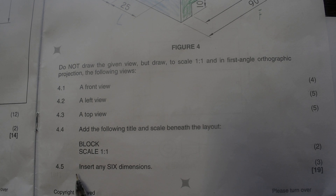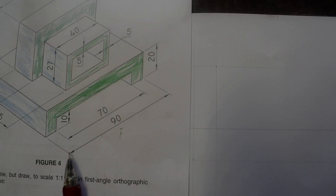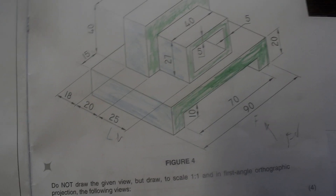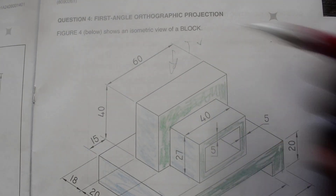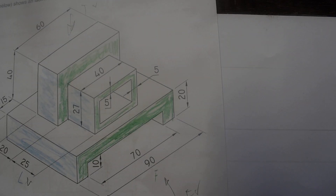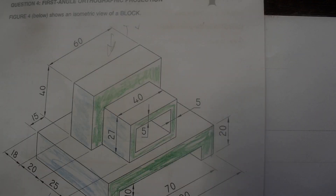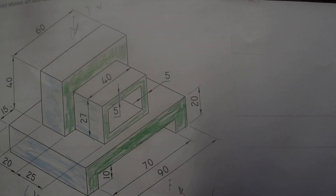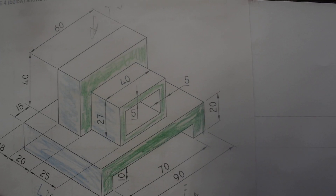The last part asks you to add the title and scale beneath the layout, and also add any six dimensions. As I started in the previous video, from here till there is 19 millimeters. This side you are going to get your front view, this side you're going to get your left view, and on top you are going to get your top view. From here till there is 19 millimeters, which is the length of our front view. Going up vertically is the height.